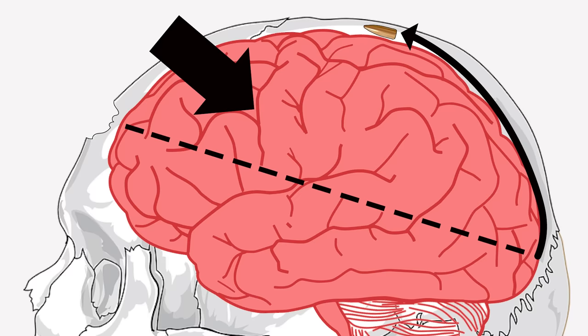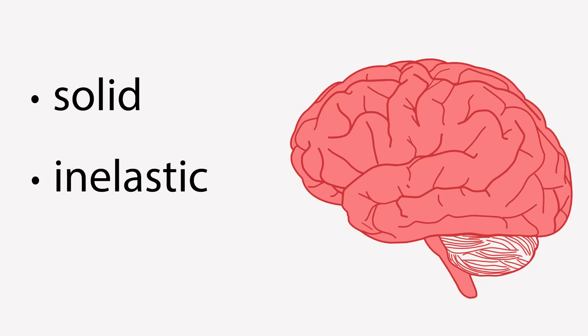Finally, what happens to the brain in this whole ordeal? Well, it's bad. The brain is a solid, inelastic, and incredibly soft organ. Unfortunately, these properties do nothing to reduce the damage the brain receives from a gunshot.